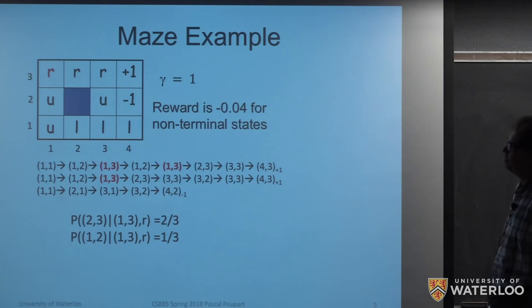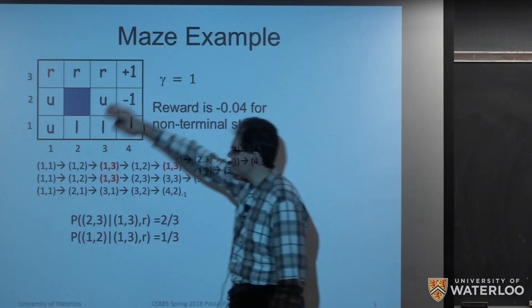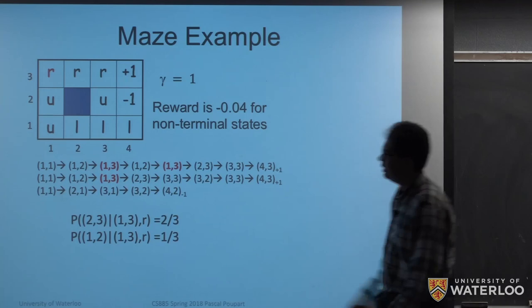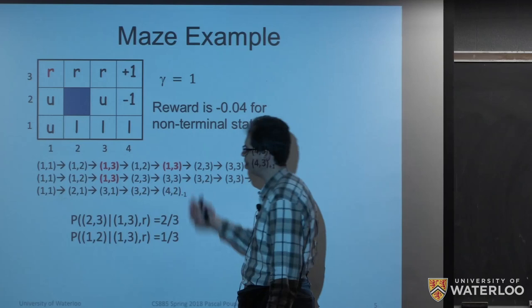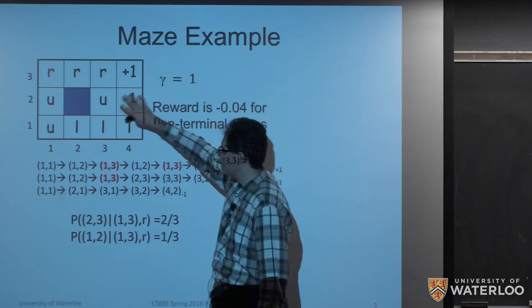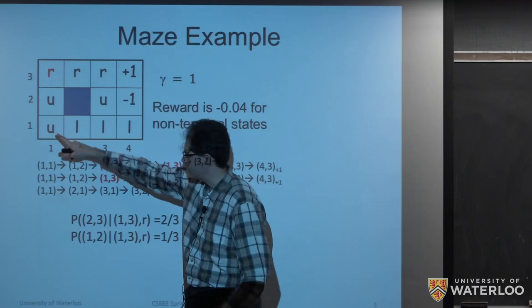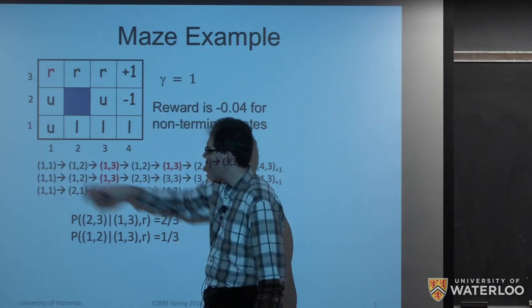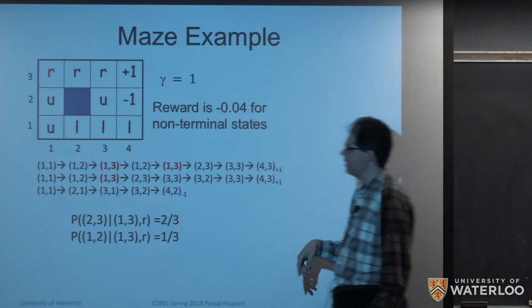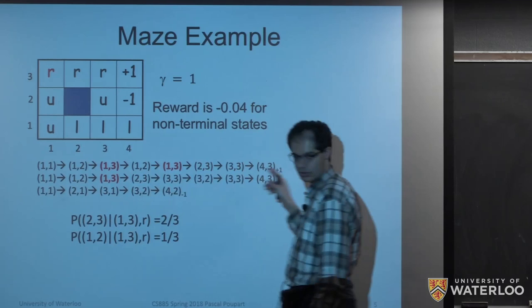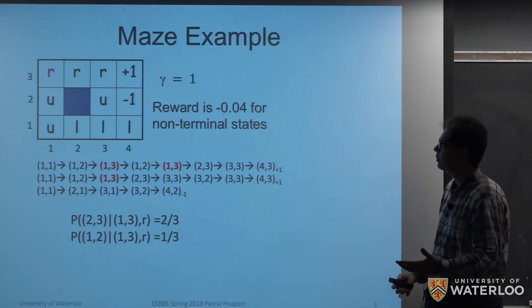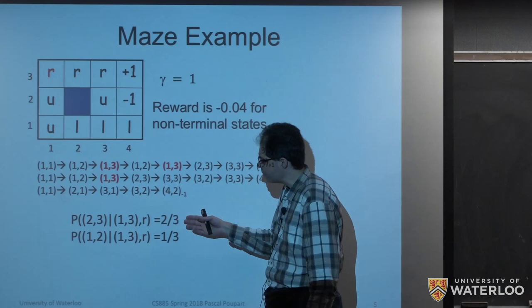Let's start with a simple example to illustrate a model-based technique, going back to a little maze. We start in cell one and follow a policy. Whenever we execute an action — say 'up' in cell one — most often we'll end up in cell two, but in some cases we might end up in an adjacent cell. If we simply execute a policy, we can observe some trajectories, and now if we're doing model-based RL, we can estimate the probabilities of reaching different states given some actions.